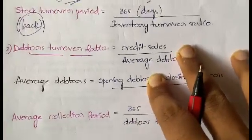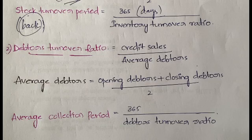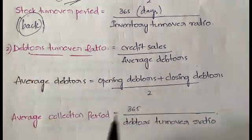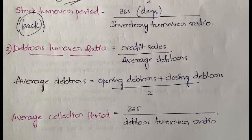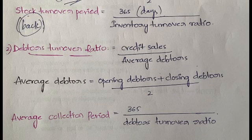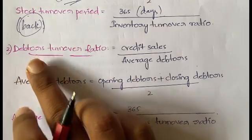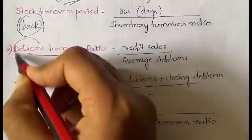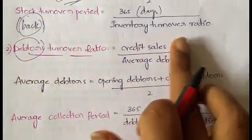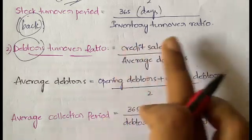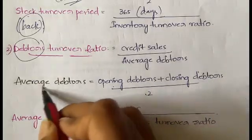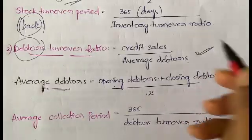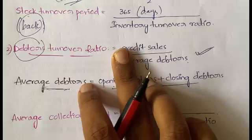The second type is debtors turnover ratio. Debtors are those to whom you are selling goods on a credit basis — meaning they do not pay immediately but after a few days, maybe in installments. Debtors turnover ratio equals credit sales divided by average debtors. Average debtors is calculated as opening debtors plus closing debtors divided by two.